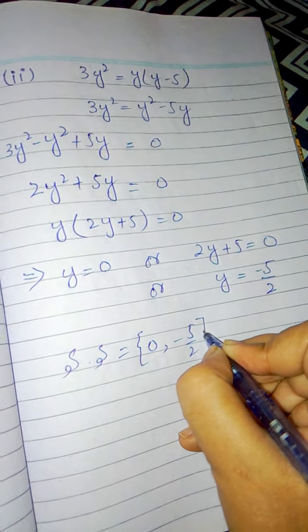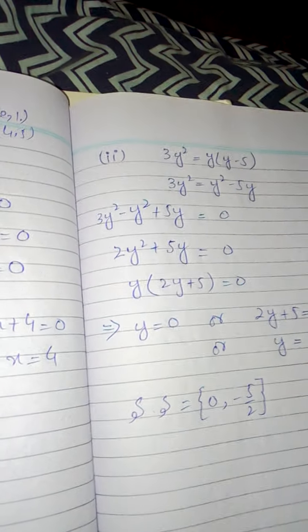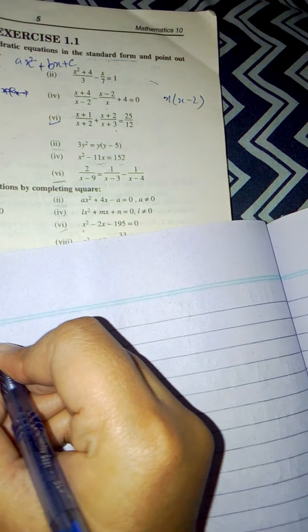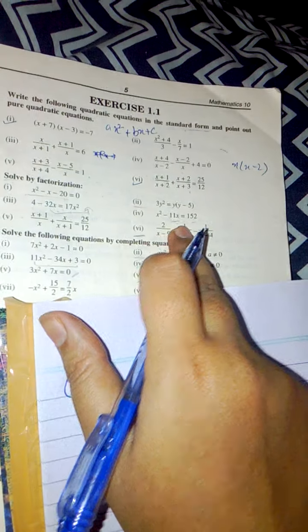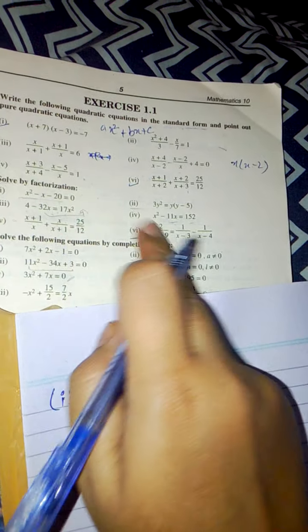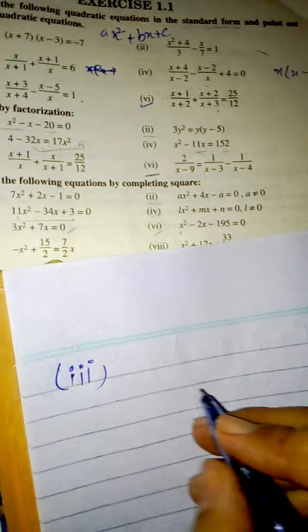The solution set will include this value of y, which is zero, and the other value is negative 5 over 2. I have done the second part. Now come to the third part. Similarly, I'll do part four, then the remaining two parts with relevant examples.